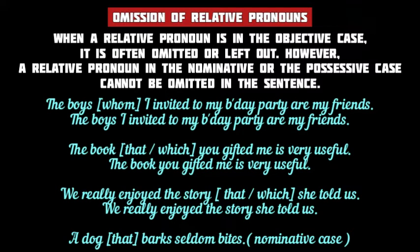Next we have the omission of relative pronouns. A relative pronoun may be in the nominative, objective, or possessive case, but if it is in the objective case it is often omitted from the sentence. However, a relative pronoun in the nominative or possessive case cannot be omitted. So if the relative pronoun is the object of the relative clause, it may be left out. In the first example, 'whom' is in the objective case — the object of 'whom I invited to my birthday party' — and so it may be omitted.